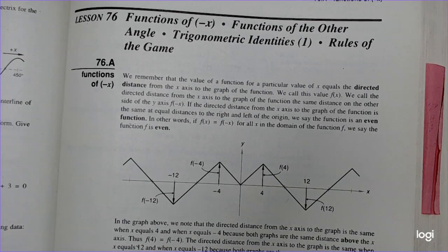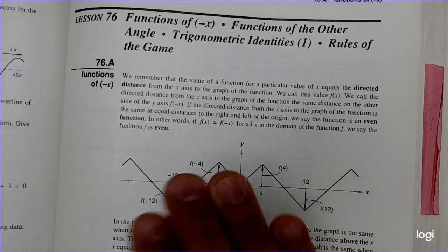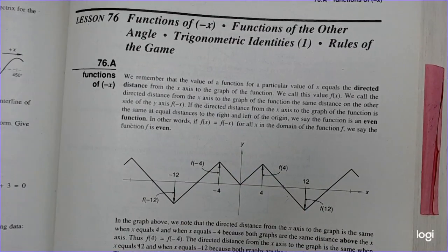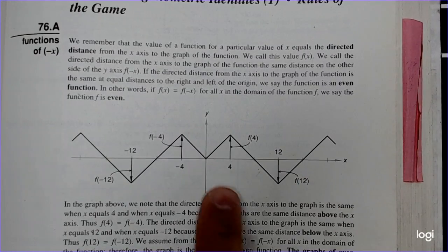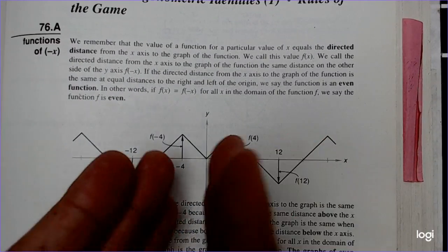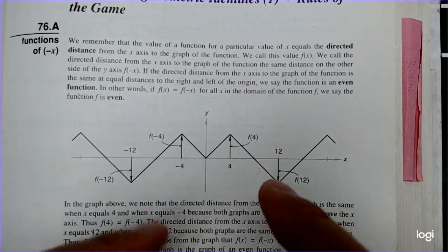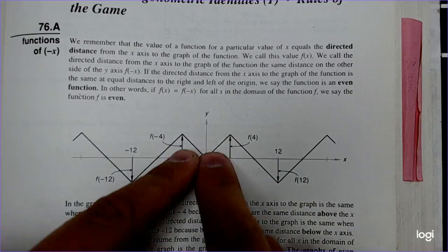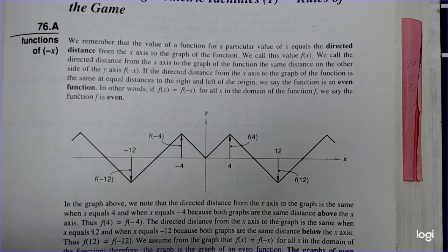Let's start with functions of negative x. We're going to talk about what are referred to as even or odd functions. We can think of this by looking at the graph of the function or by algebraically solving it. Even functions like this one shown here are symmetric about the y-axis, meaning that if I fold the graph on the y-axis like a book, these parts would match up perfectly and line up.